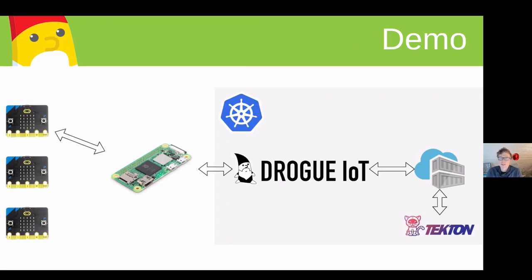Let's do a demo of the entire system. We're going to have a micro:bit connected to a gateway — which can be anything from a Raspberry Pi to something more powerful — and the gateway forwards events to Drogue IoT running in the cloud. It uses a container registry for storing firmware updates and Tekton pipelines to build the firmware.